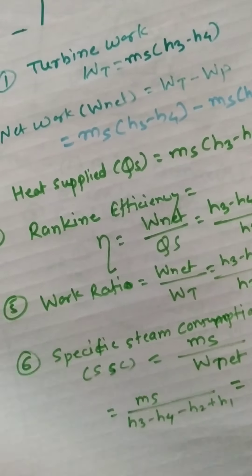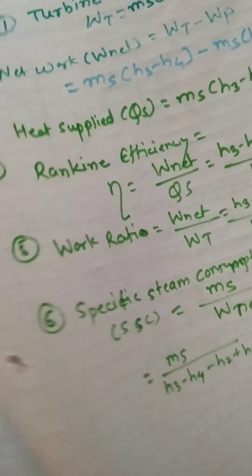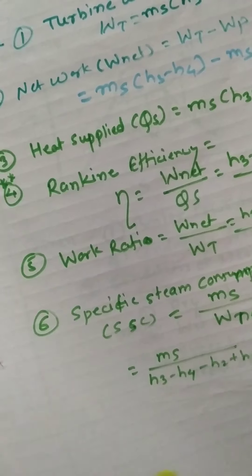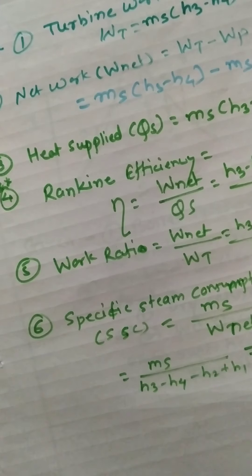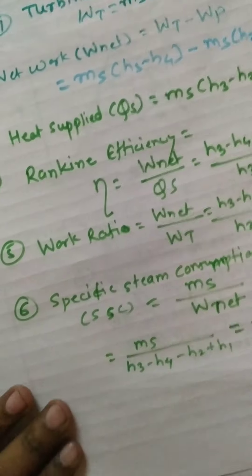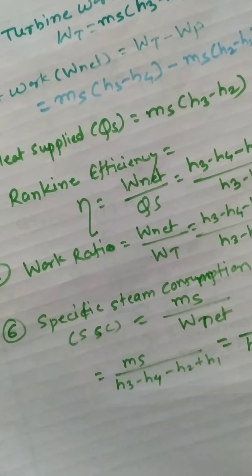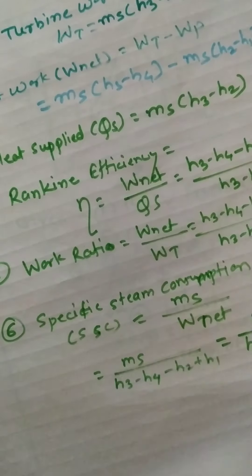The key insight is that before solving for any of the six parameters, you must first find all four enthalpies: H1, H2, H3, and H4. Irrespective of what is asked, always calculate these four enthalpy values first. There are four simple steps to do this.